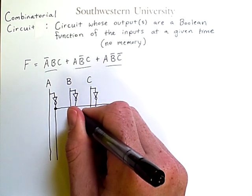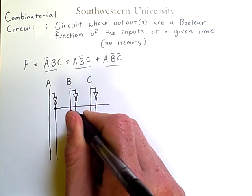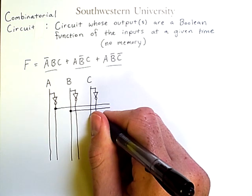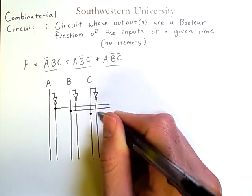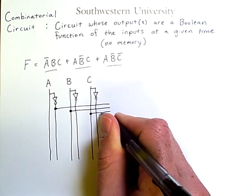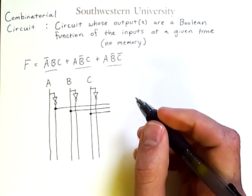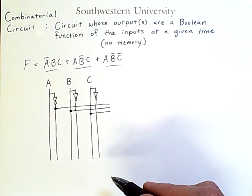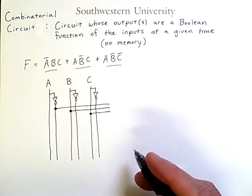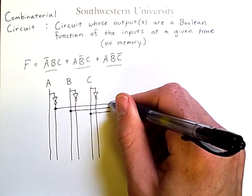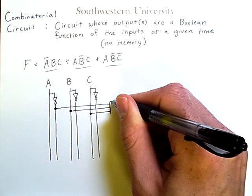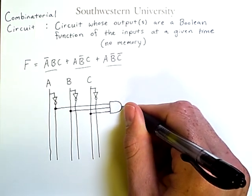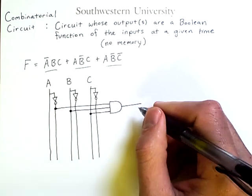I'll do a line here that carries B. And then one more line here that carries the value of C. Now, I am ANDing these three things together. Previously, we've seen AND gates that take two inputs and produce one output. But for simplicity, we can simply draw an AND gate that takes all three of these inputs, like so, and produces the result of ANDing the three inputs.